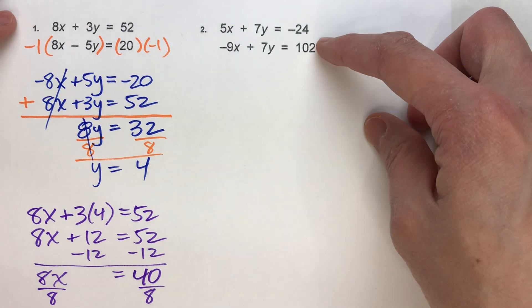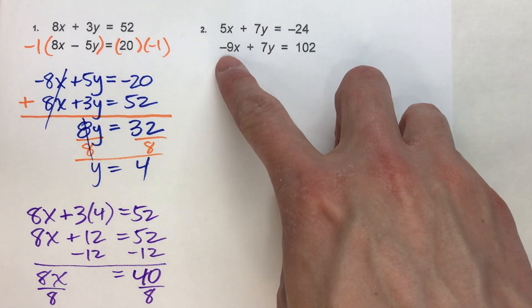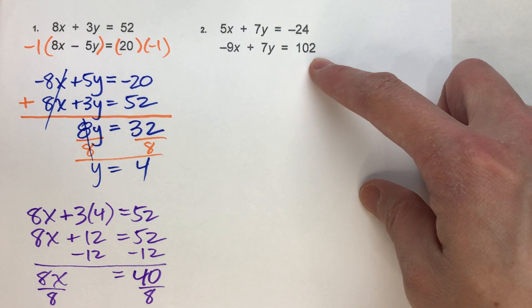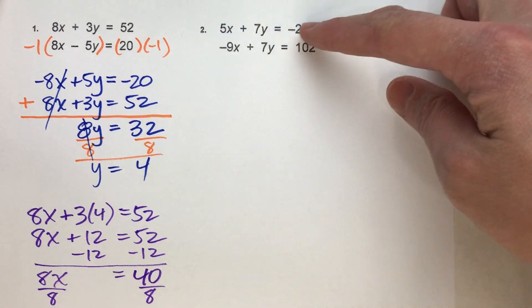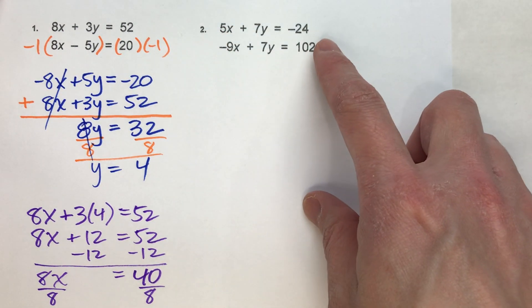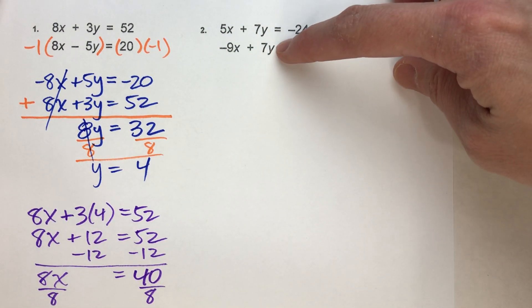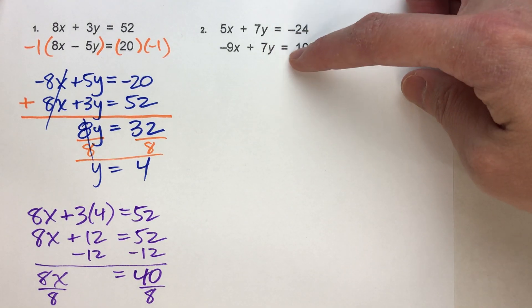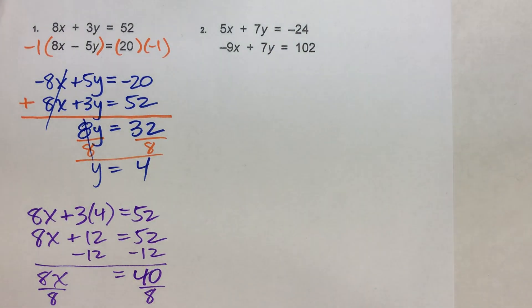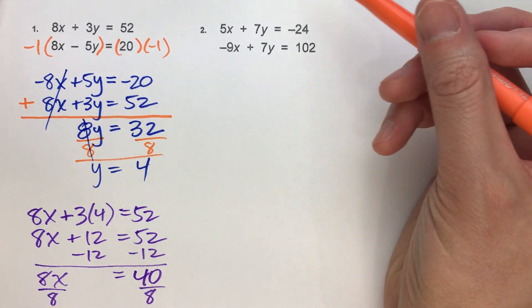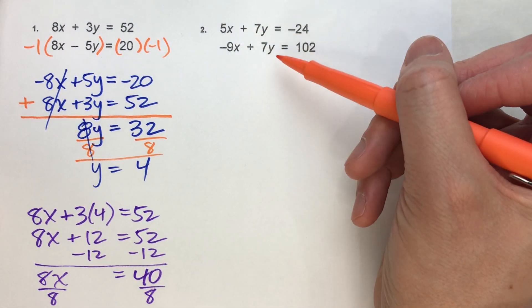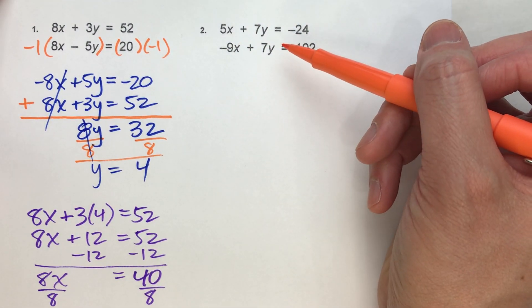Number two. Here we go. 5x + 7y = -24. -9x + 7y = 102. Notice I can't add the two equations together because it won't eliminate any. But I do have the exact same number of y's this time. So what I'm going to do, just like last time, I'm going to multiply both sides of one of them by negative 1. And it really doesn't matter which one you choose.